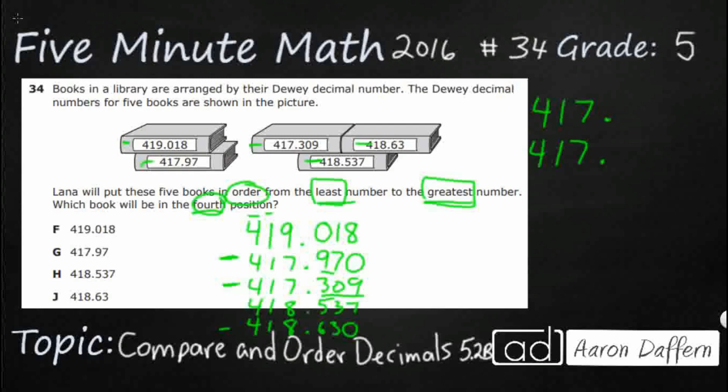Then I've got, in the tenths place, my 9 and my 3. Obviously, my 3 is smaller. 309, remember we're going least to greatest, is smaller than 970. And I did put that zero there, so I'll just go ahead and drop that zero. It's just kind of imaginary. So I've got 417.309, 417.97.